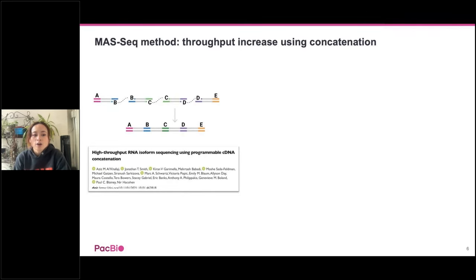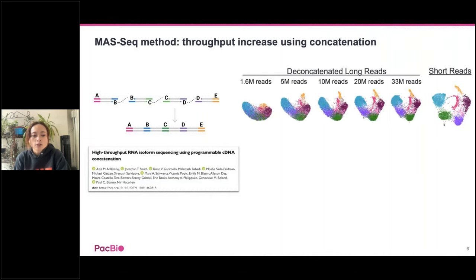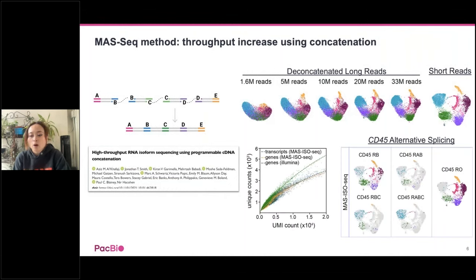Let's talk about concatenation. MOS-Seq is a throughput-increased method that can concatenate smaller amplicons into larger DNA inserts. This is doable for cDNA because most transcripts are about 1 to 2 kilobases, and HiFi read lengths can be up to 15 to 20 kilobases. By concatenating smaller amplicons into larger inserts, we can increase throughput. The authors showed with matching short and long read data that we can recapitulate the same cell types, and importantly also see cell-type-specific isoform expression — in this case, the different isoforms of CD45.